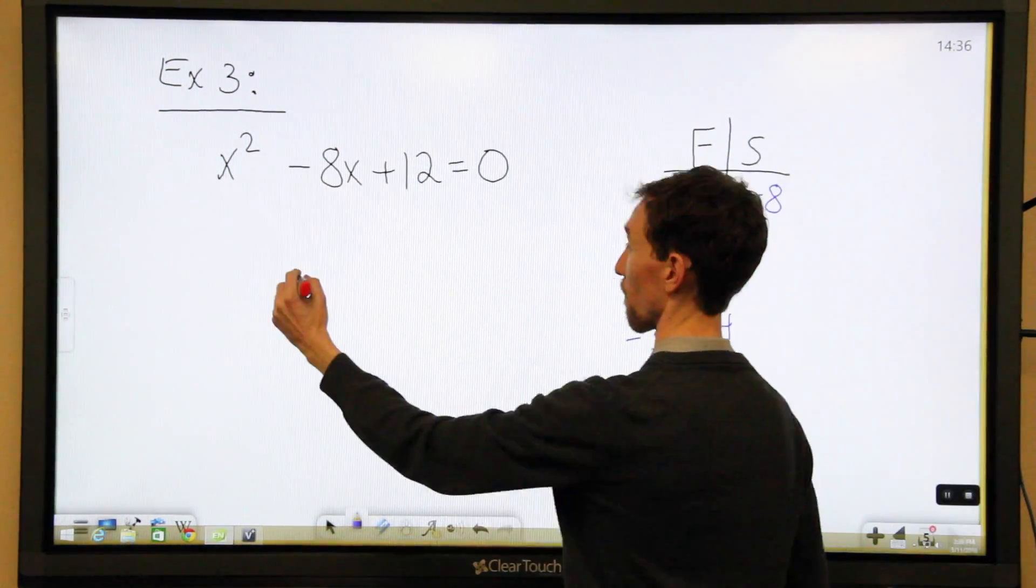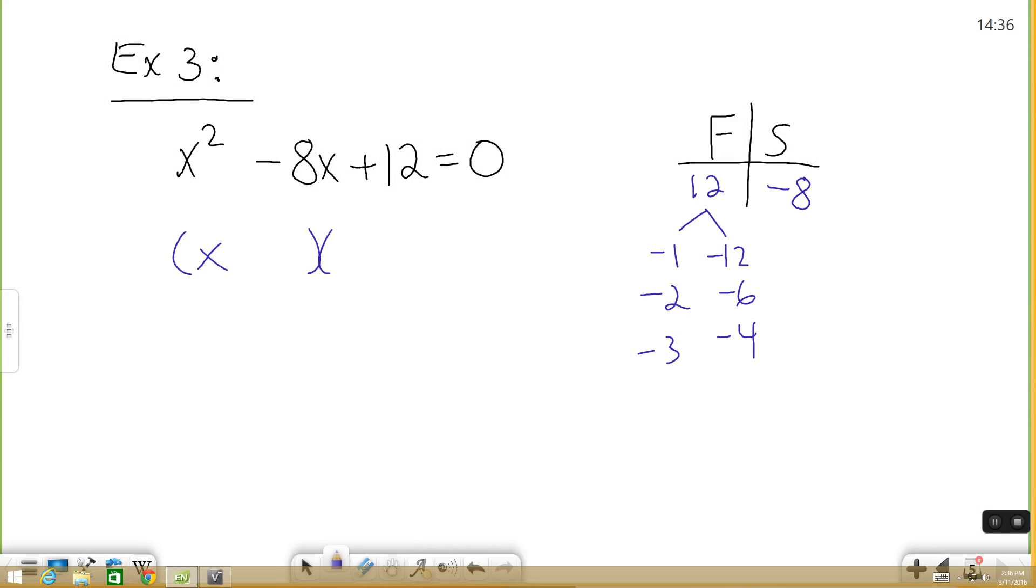So, we have x and x and negative 2, negative 6. So, set them each equal to 0 and solve.